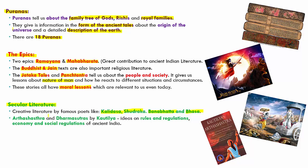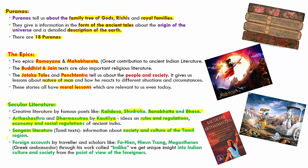The Arthashastra and Dharmasutras given by Kautilya, or Chanakya, contain ideas on rules, regulations, economy, and social regulations of ancient India. We also have Sangam literature, which are generally Tamil texts giving us information about the society and culture of the Tamil region of India.